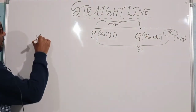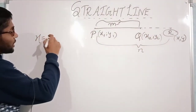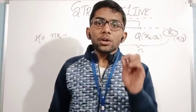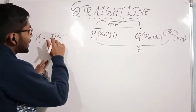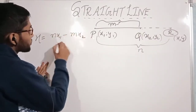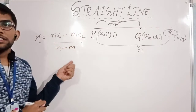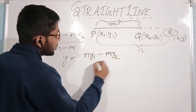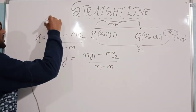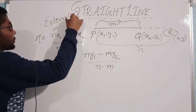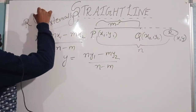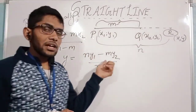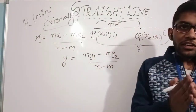उस case में R के coordinates क्या होंगे? x-coordinate of R = n into x1 minus m into x2, divided by n minus m. ध्यान दीजिए — external division में minus का sign आता है। y-coordinate of R = n into y1 minus m into y2, divided by n minus m. यह था external division का section formula।